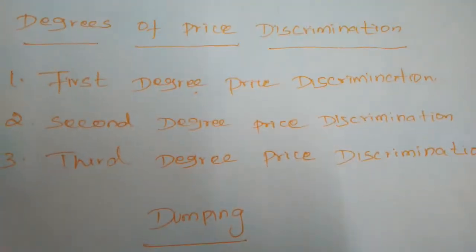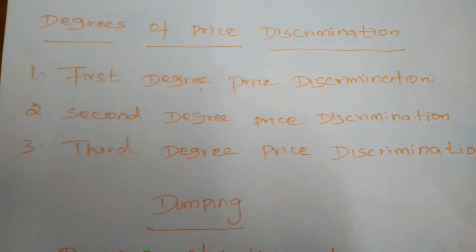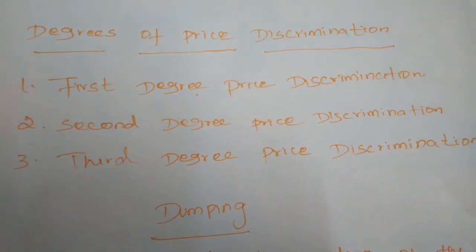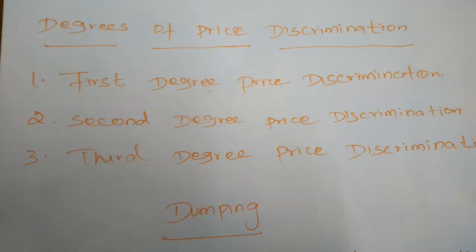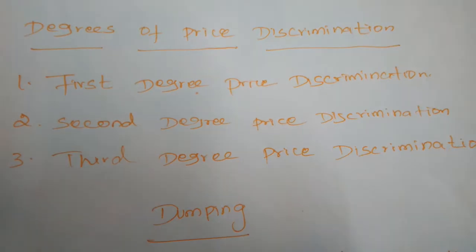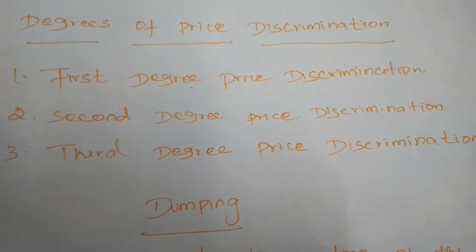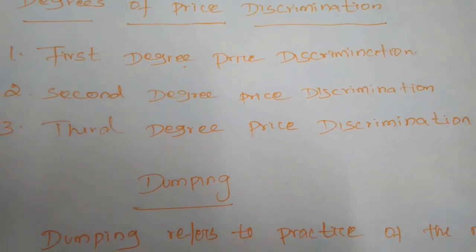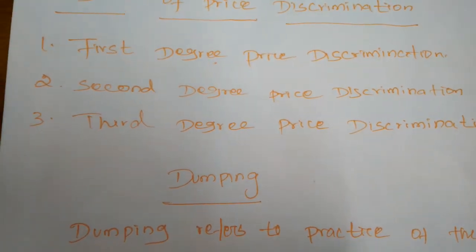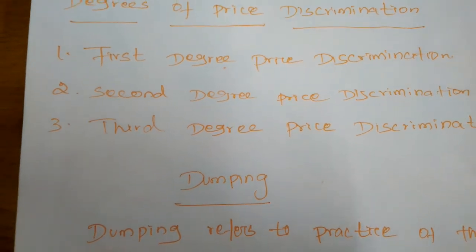Next are the degrees of price discrimination. When fixing different rates, in which degrees is the price differentiated from real prices? Price discriminations are classified into three types: first degree price discrimination, second degree price discrimination, and third degree price discrimination.